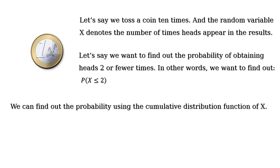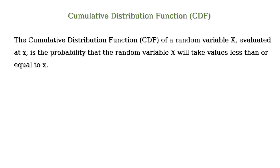The cumulative distribution function of a random variable X evaluated at small x is the probability that the random variable capital X will take values less than or equal to small x. In other words, F(x) is equal to P(X ≤ x).